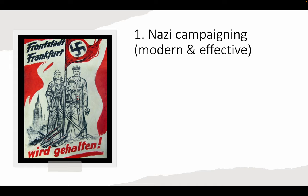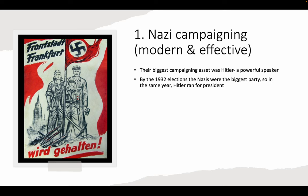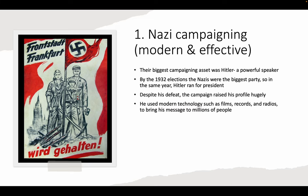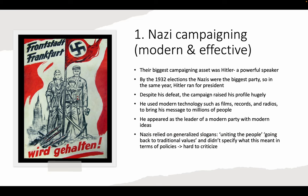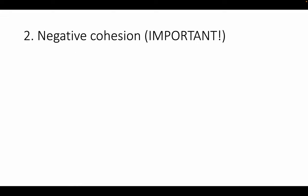Factor one was Nazi campaigning — modern and effective. Hitler was the biggest asset as a great public speaker. In 1932 he even ran for president; despite defeat, the campaign raised his profile enormously. He used modern technology — films, records, and radio — to bring his message to millions of Germans, appearing as the leader of a modern party with modern ideas. The Nazis relied on generalized slogans like uniting the people and returning to traditional values, without specifying exact policies, making them hard to criticize. They also backed up their campaign with real action: soup kitchens, free food, and rooms for the unemployed. The concept of 'negative cohesion' was central to their appeal.